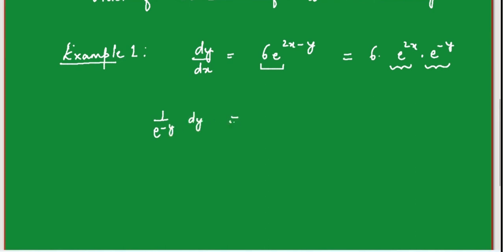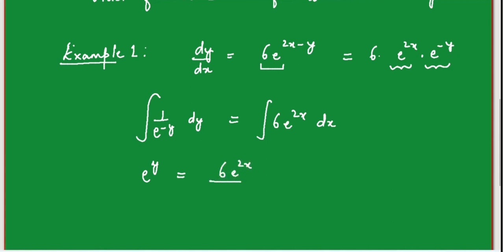Following the procedure, take e^(−y) with dy on one side and 6e^(2x) with dx on the other side, then integrate both sides. The integral of e^(−y) is e^(−y)·(−1), giving e^y on the left, and the integral of 6e^(2x) is 6e^(2x)/2 = 3e^(2x) on the right. Writing a single arbitrary constant, the general solution is e^y = 3e^(2x) + C.